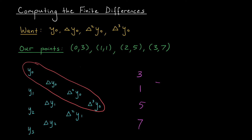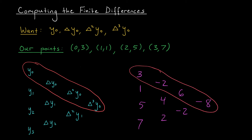1 minus 3 gives me minus 2. 5 minus 1 gives me 4. 7 minus 5 gives me 2. Next I just do it again — rinse and repeat. 4 minus minus 2 gives me 6, and 2 minus 4 gives me minus 2. One more time: minus 2 minus 6 gives me minus 8. The terms that we're looking for are found along this first line of my triangle. This is y naught, this is delta y naught, this is delta squared of y naught, and this is delta cubed of y naught. Let's put them in our formula and obtain our polynomial.